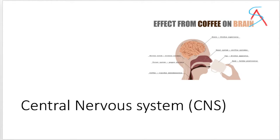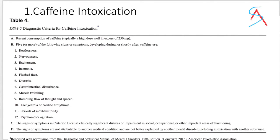In the central nervous system, caffeine stimulates the brain, spinal cord, and nerves. If caffeine is taken in higher amounts, it can result in caffeine intoxication, which can present with five symptoms out of twelve, including restlessness, nervousness, excitement, insomnia, and many others.